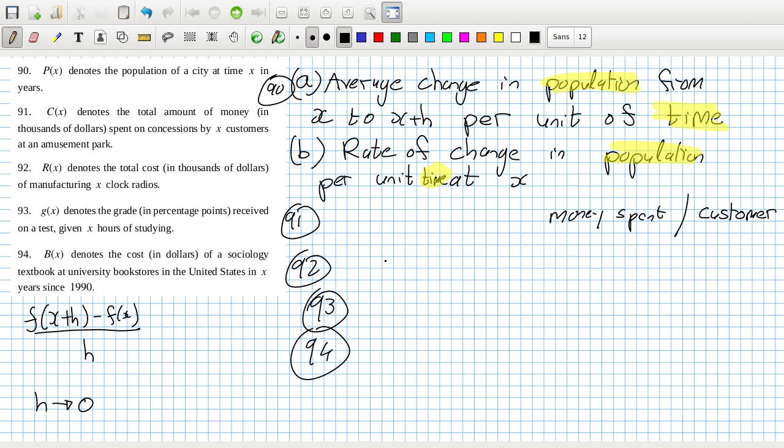And then the b part is just the rate of change in money spent per customer. Okay, 92 is just going to be the same thing again except cost per radio, and then 93, it's the grade per x hours, not for x hours of study, per time which is hours in this question.